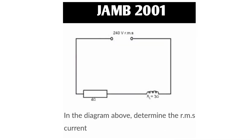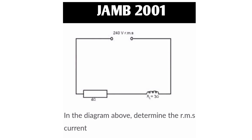This is the second question on the same topic — AC circuits — to show you how important this topic is. From the diagram, determine the RMS current. The circuit contains a resistor and an inductor connected in series.